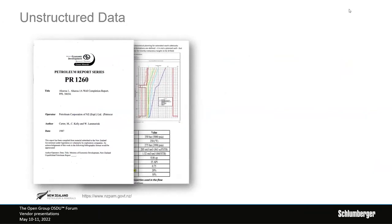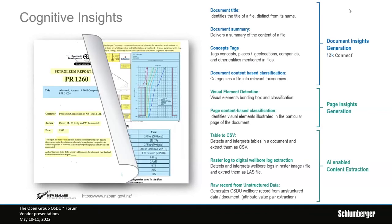In the context of unstructured data — something we also presented last year — we have been extracting value from these documents in many ways. We have leveraged not only in-house technology created by our innovation centers across the world, but also the best of breed partners. We've been able to visually detect and extract elements from documents, including table extraction as demonstrated last year, and now moving forward to digitize log records or images from those documents into the OSDU databases.